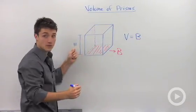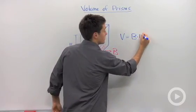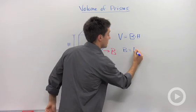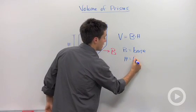Capital B is your base area and capital H is the height of the prism.